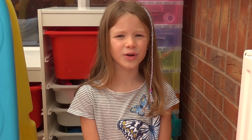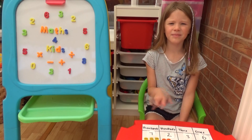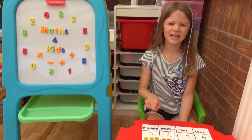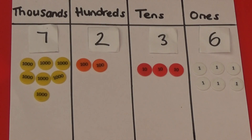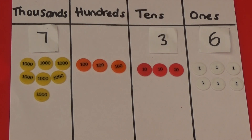First I'm going to look at adding 100 to a number. If I add 100 to this number, I only need to look at the hundreds column as the thousands, tens and ones won't change. To add 100, I need to add another 100 counter. So my number now is 7,336.